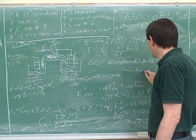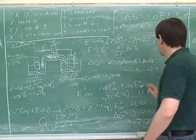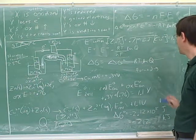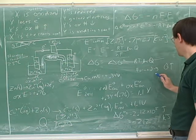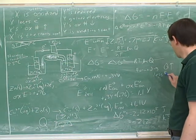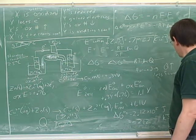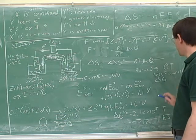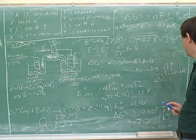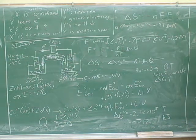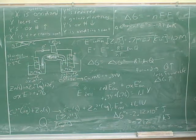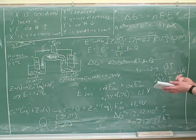Now again, as the reaction goes forward, is Q getting bigger or smaller? Bigger. Bigger. And is the reaction becoming more or less favorable? Less favorable. So should delta G be moving to the right or left on the number line? To the right. So as the reaction goes forward, are Q and delta G moving in the same direction or opposite directions?